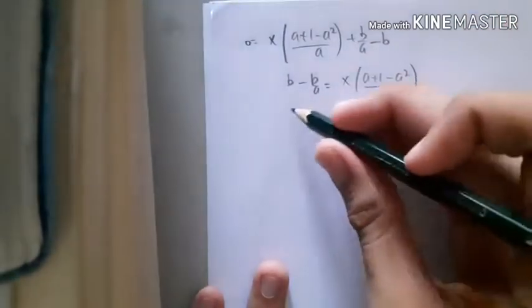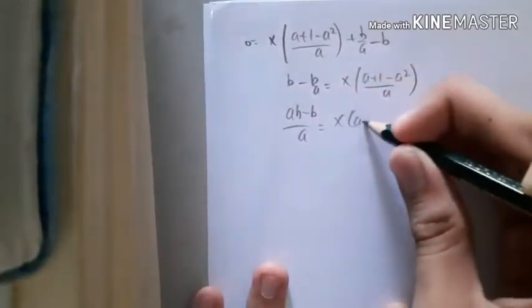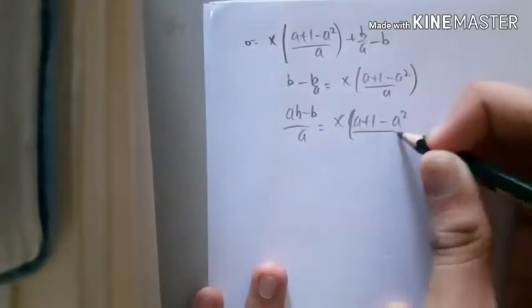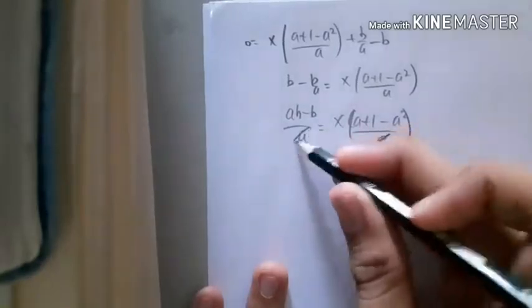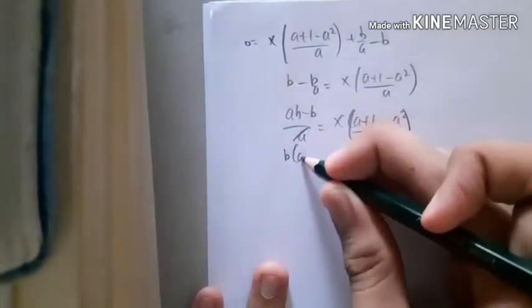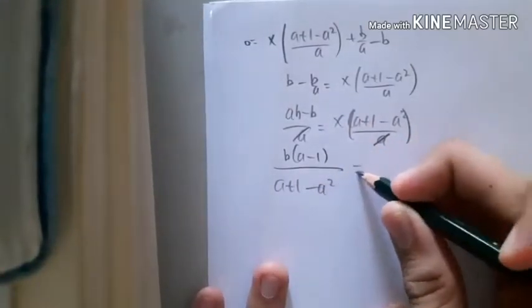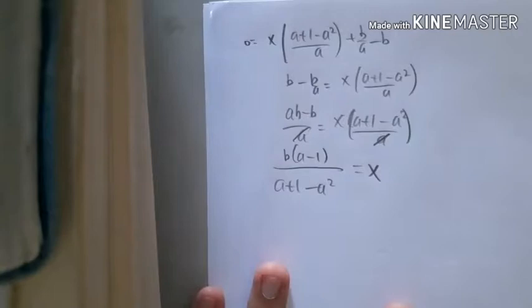Now we can rationalize this denominator. So (ab-b)/a, x of (a+1-a²)/a, cross this a, right? So we can say that b(a-1)/(a+1-a²) equals x. So this is the answer for x_n.